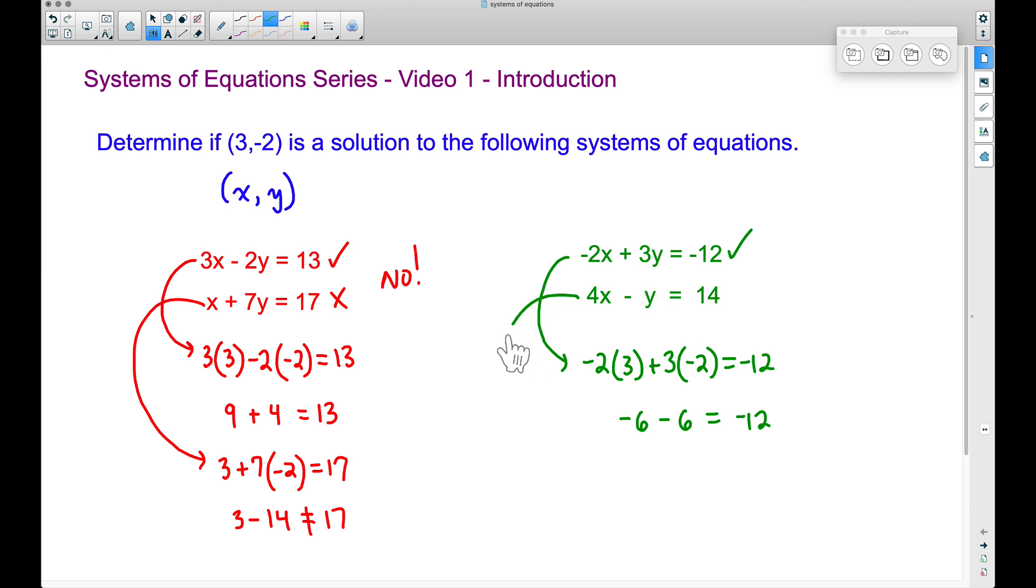So now let's bear in mind it has to work for the second equation as well. Four times x, so we're taking four times three minus, bringing that on down, and then we have that y. Remember y is negative two. So I'm going to write that negative two.